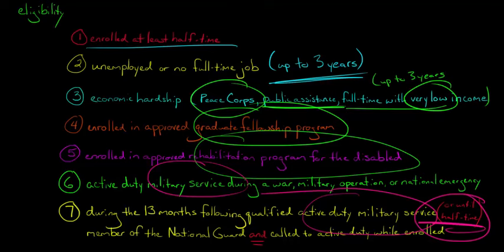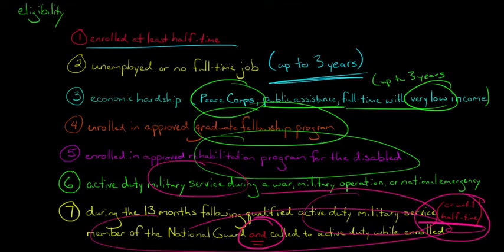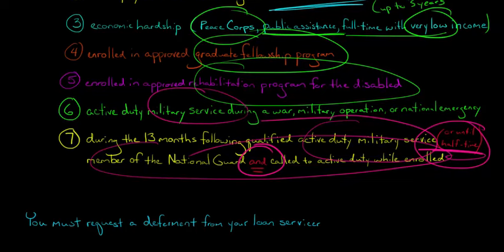So if you enrolled half-time in seven months, then it would be seven months. And you are a member of the National Guard, and you are called to active duty by a governor while you're enrolled, then in that case you can also be eligible for a deferment.